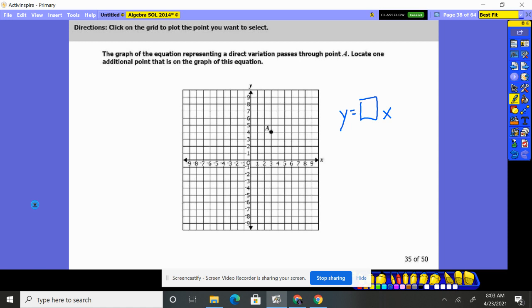I know it goes through this point (3,4) and it could be some fraction there. Locate one additional point that's on the graph of this equation. Now the one thing I do know is it will always go through (0,0), so one of the points you can hit is (0,0).